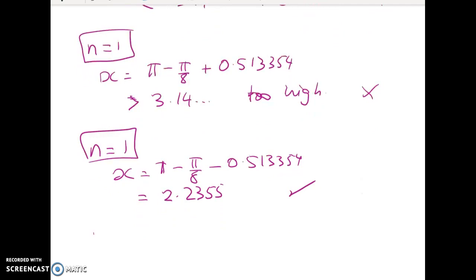Now I'm just going to check, do I need to check n equals 2? Well, I kind of should, in case something weird's going on. I'm just going to check the end one there. So it's 2π minus π/8 minus 0.513354. And that one's too big. So we reject.